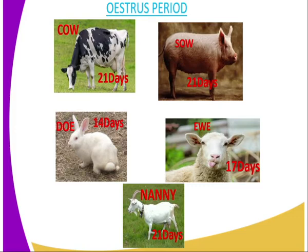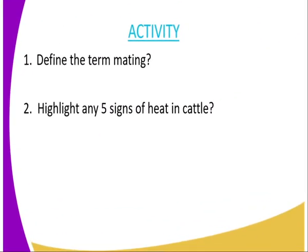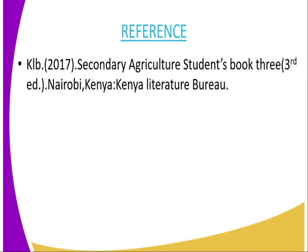If after serving the animal the fertilization did not take place, then the oestrous period must repeat itself once again. We have come to the end of today's lesson. I am going to mark the end of this lesson by assigning you some questions. The first question is: define the term mating, and number two, highlight five signs of heat in livestock.